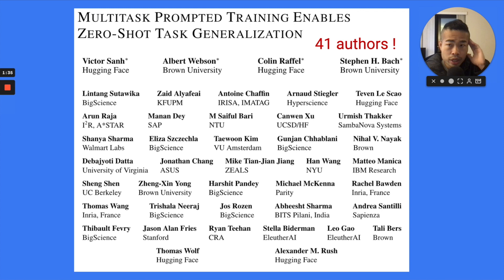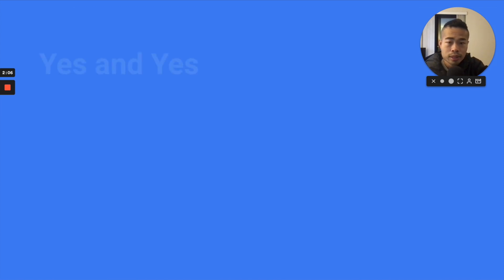So this paper is super interesting. It's published very recently, Multi-Task Prompted Training, and it enables zero-shot task generalization. It's a paper mainly from Hugging Face and Brown University. Of course, this is a 41 author paper. It's very rare to see a paper has so many authors. But I definitely understand it's a kind of big project. You need to run on so many different tasks. And the answer for these two questions is yes and yes.